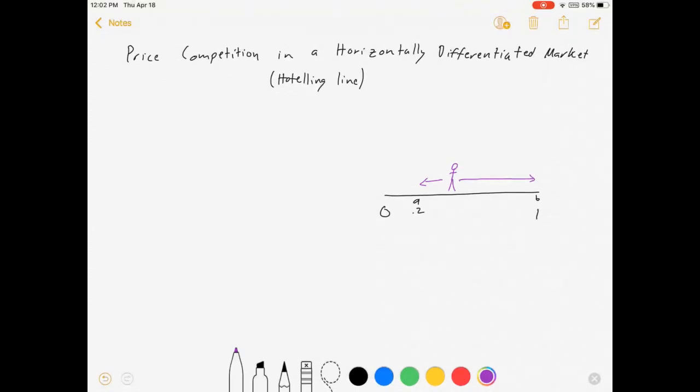Obviously, they'd rather go to A if they're selling the same product unless A is more expensive. So this is where the price competition is going to come in. They're going to be battling for consumers. Consumers are going to take into account the cost of going to the store as well as the literal price tag.